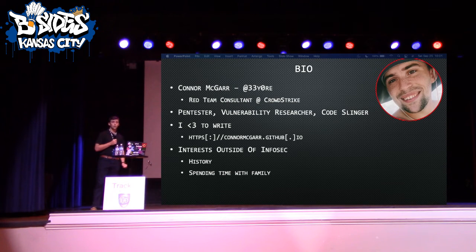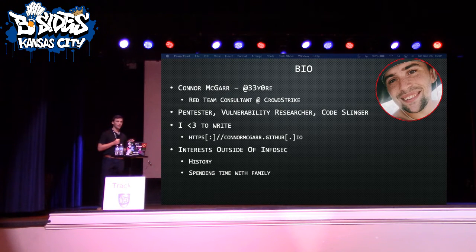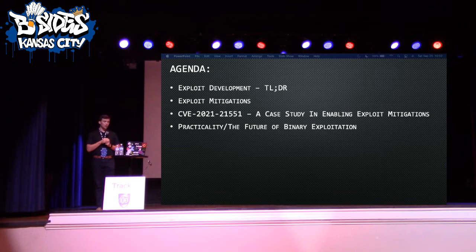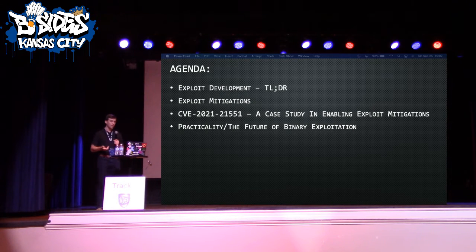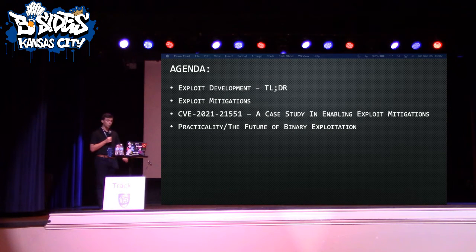My name is Connor McGar. I'm a Red Team consultant at CrowdStrike. I find myself doing Red Team pen testing in Windows Active Directory environment engagements. In my free time, I like to study vulnerability research and write — anything I find interesting, I post on my blog. Outside of InfoSec, I like to study history and spend time with family. We'll start with context on exploit development, then exploit mitigations, then a case study on a recent privilege escalation vulnerability in a BIOS driver, and finally the practicality and future of binary exploitation.